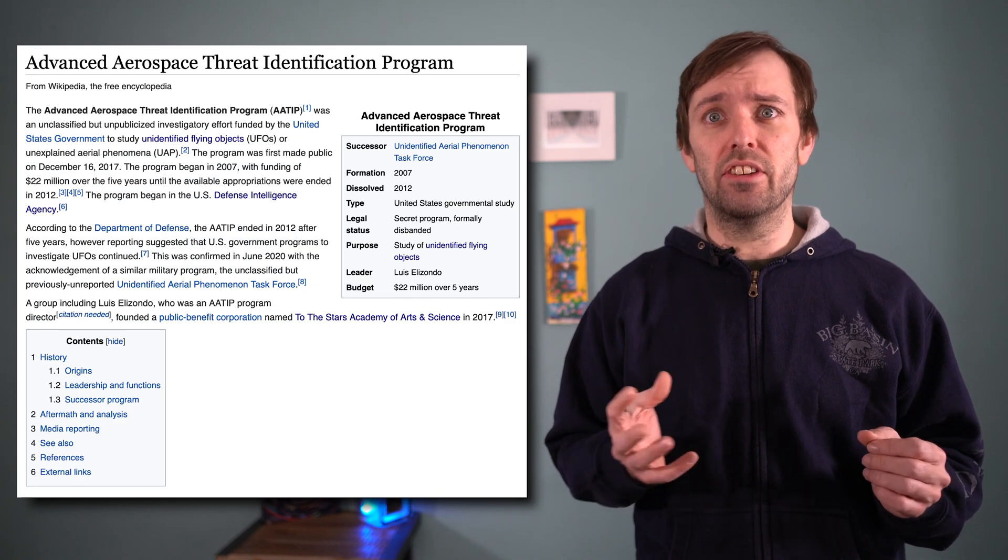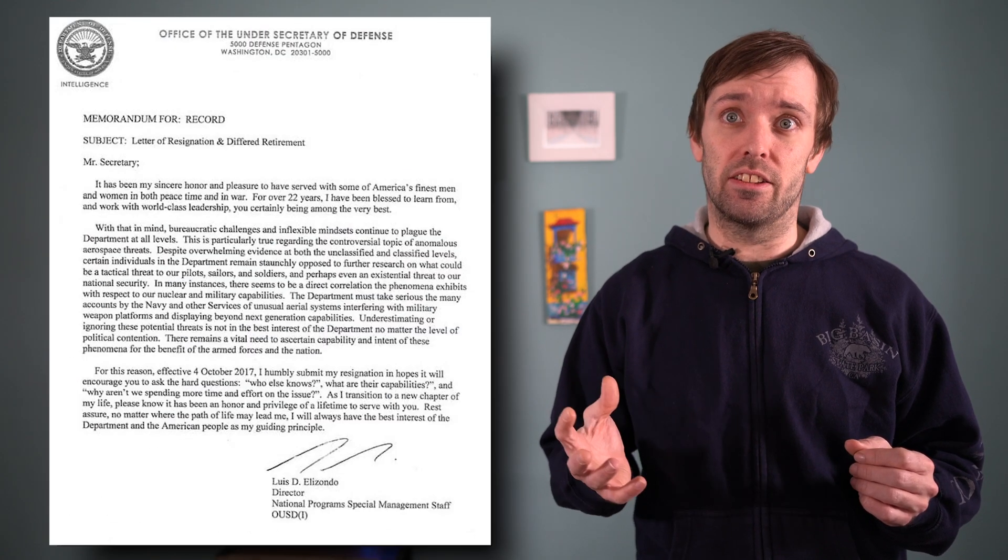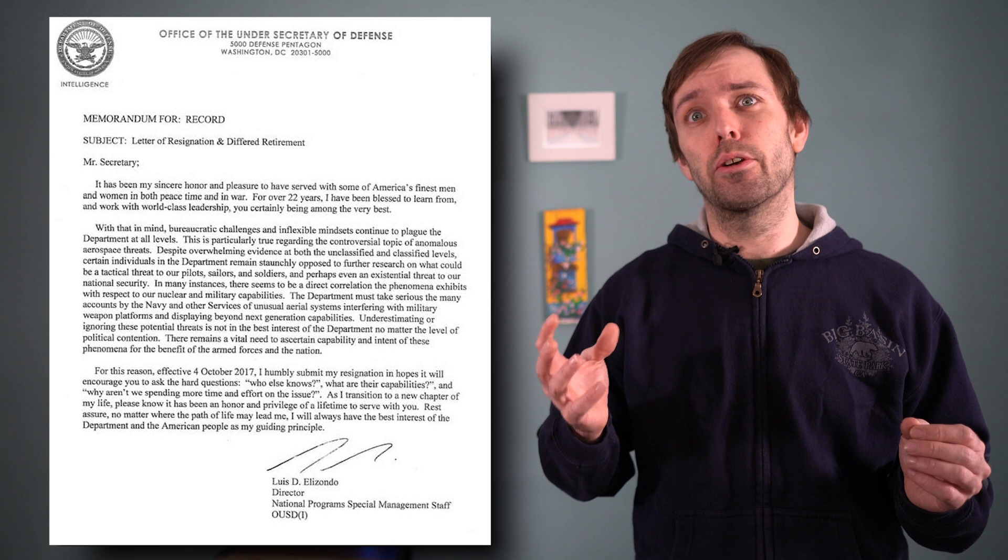If you've been following UFOs in the news, you're likely well acquainted with Luis Elizondo. By most accounts, Elizondo led the government's UFO data gathering program, ATIP, from 2008 until 2017, when he quit in protest of the government's not taking his program's findings seriously. After resigning,